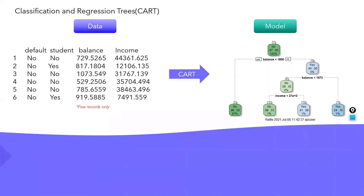Now let's see how CART works. I am going to explain CART with a classification example. As I said, CART is capable of performing both a classification as well as a regression problem. Regression problem is when you are trying to predict a number; classification problem is when you are trying to predict an event or a class. Here, I have pasted a sample data - just a few records, not all records.